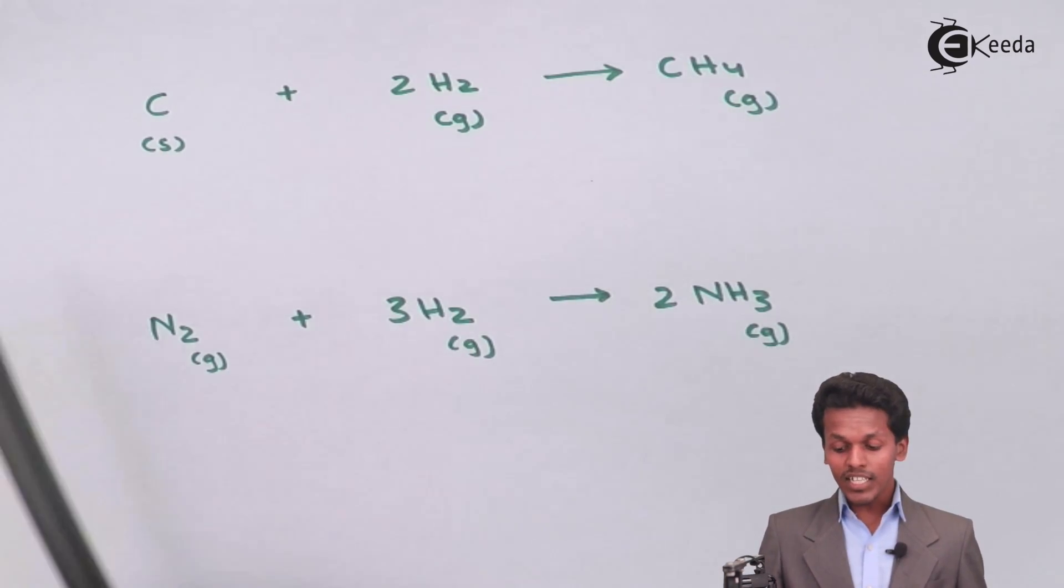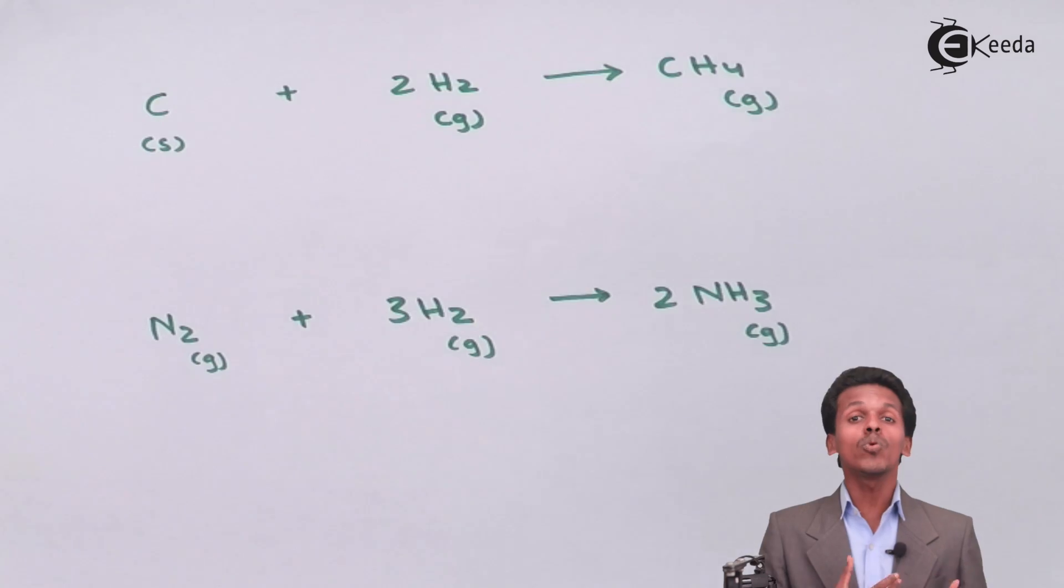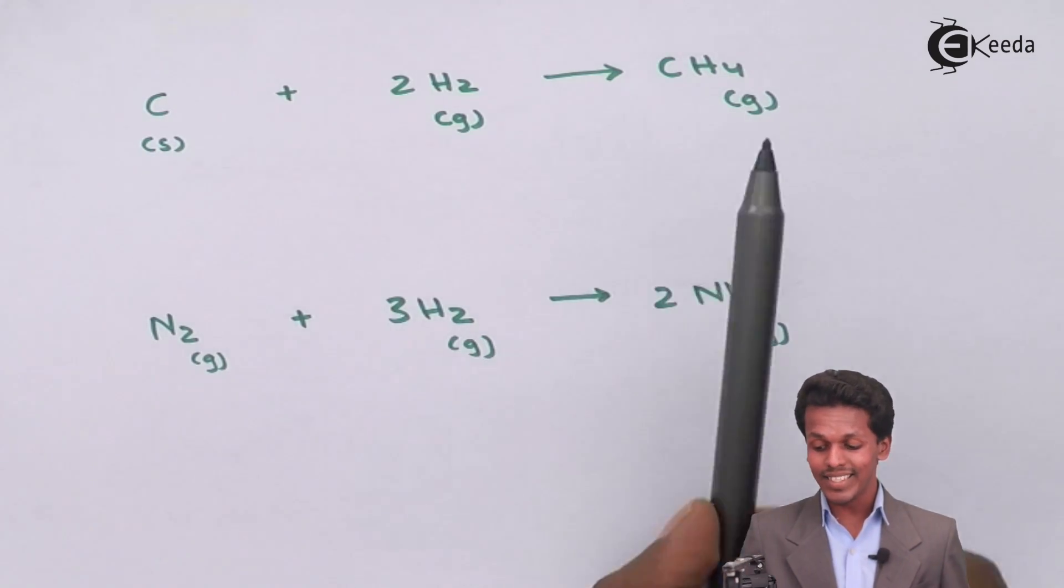When they combine with each other chemically, then a new kind of product is being produced, and in this case is methane.